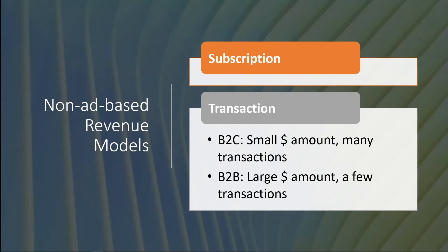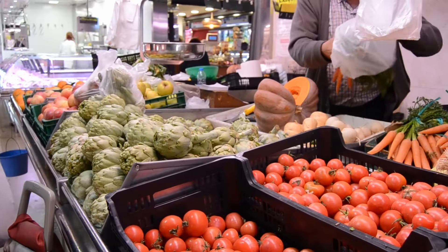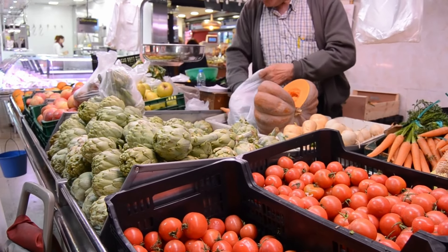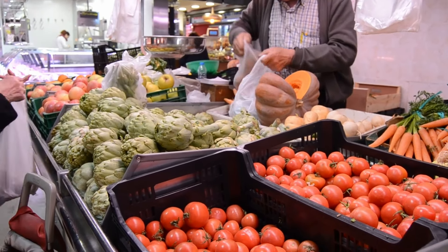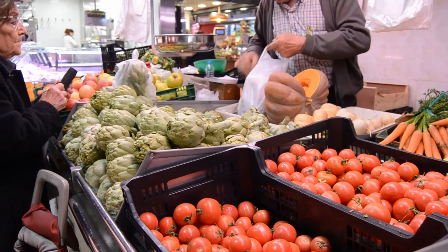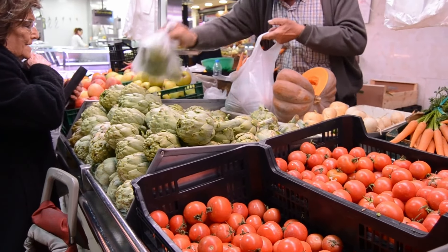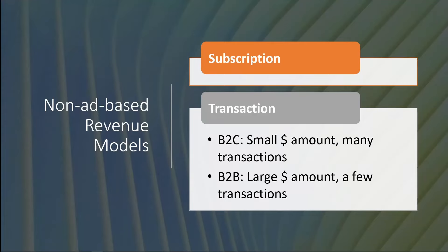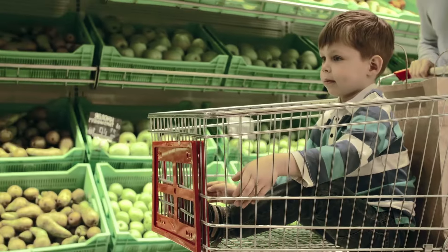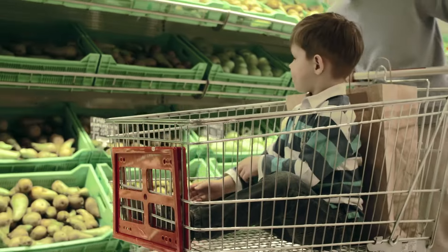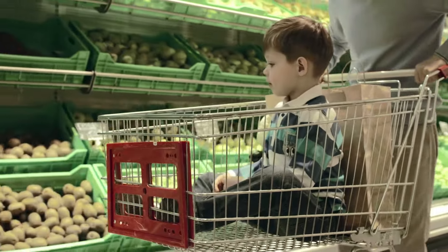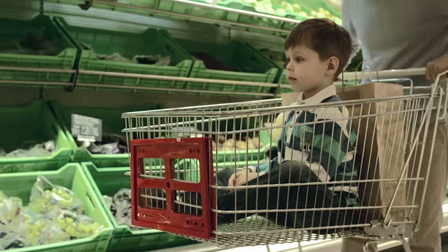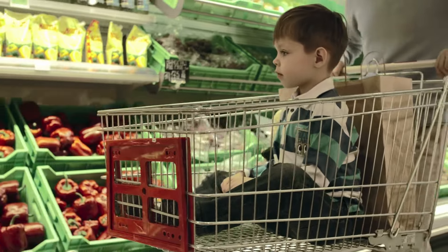The second revenue-generating model is transaction. In a transaction-based model, customers do not pay a fixed installment on a monthly, weekly, or yearly basis. Instead, customers pay each time they buy a product or service. This is common in retail, brick-and-mortar stores — business to consumers, B2C. Usually the transactions are of relatively small dollar amount, and there are many transactions. A Walmart supercenter may experience thousands of transactions every hour.